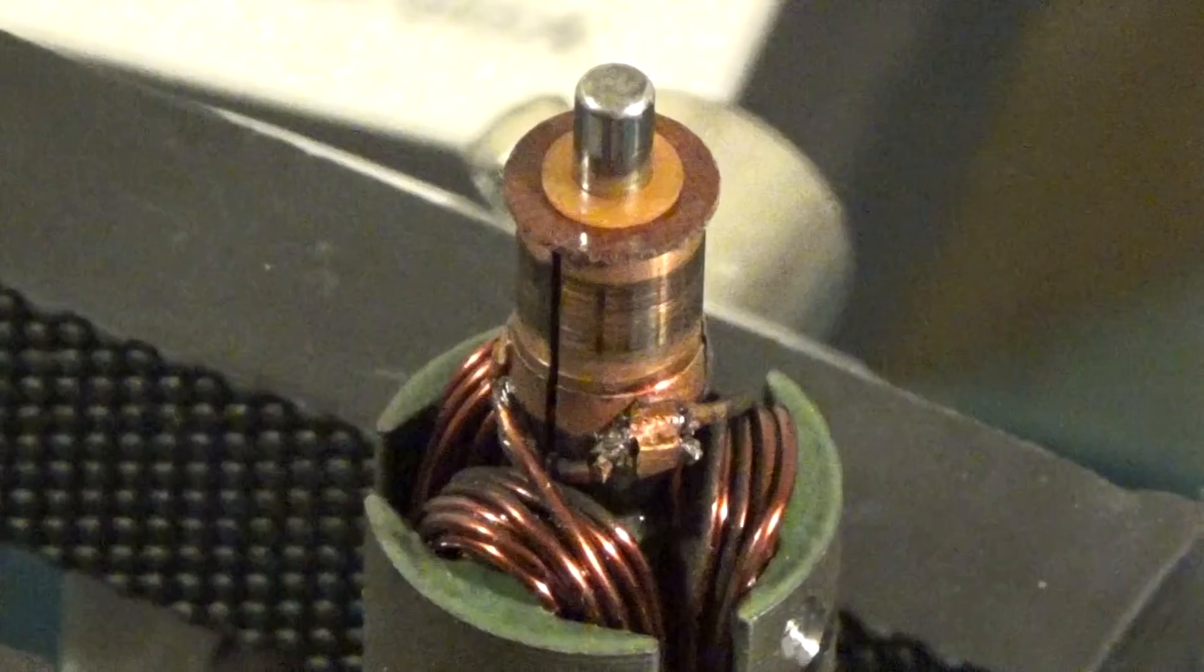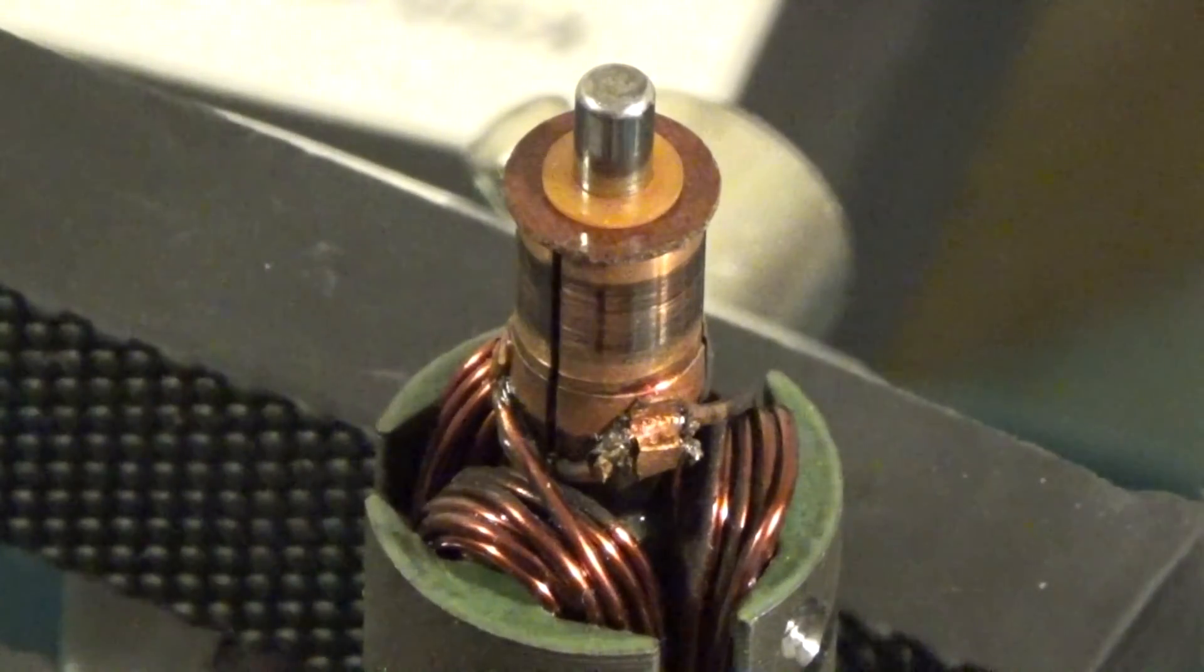On top of the armature is the commutator, where the electricity from your battery flows into the wires on the armature. This motor has three contact points on the commutator. All airsoft motors have three points, but other motors have more.